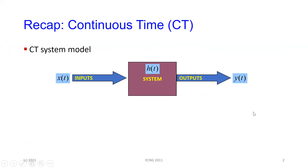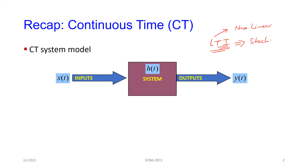The continuous time model: the system takes a continuous signal in, the system is continuous, and the output is continuous. For our purposes at this level, we're dealing with linear time invariant systems. If you do things like advanced controls, you'll start to get into non-linear systems, and instead of time invariant, you'll come across something called stochastic.